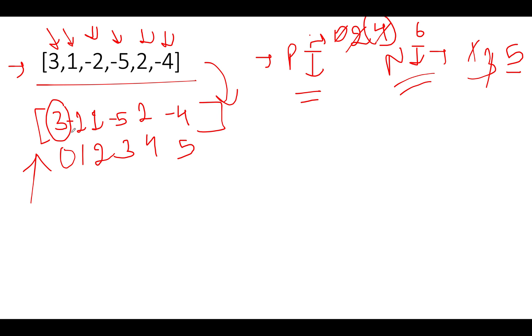Also the relative order of positive elements is preserved. We have 3, 1, 2. Here also we have 3, 1 and 2. With respect to the negative, the order of negative numbers, it starts from minus 2, minus 5, minus 4. The relative order, relative ordering is still preserved, minus 2, minus 5, minus 4.